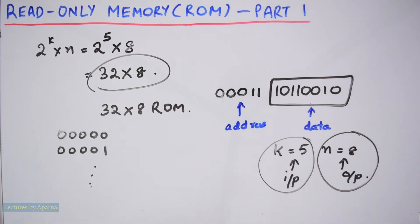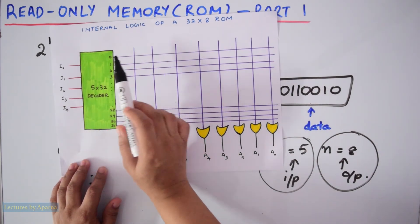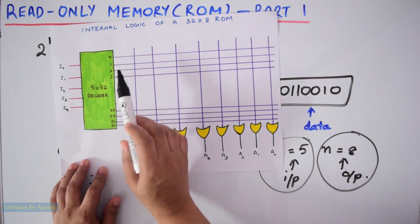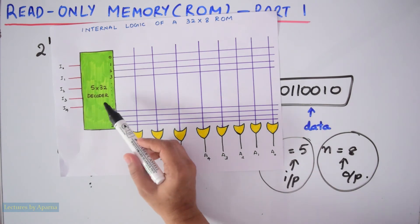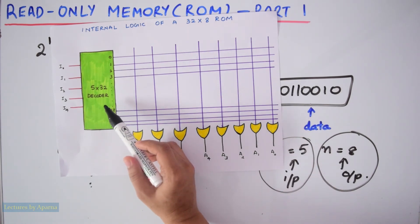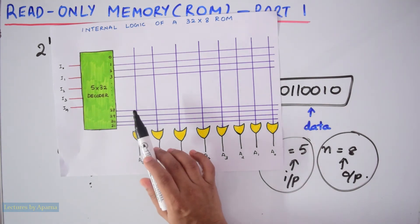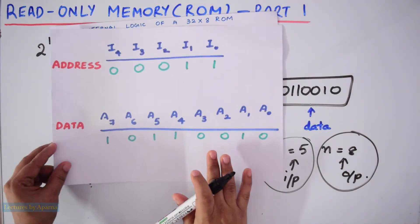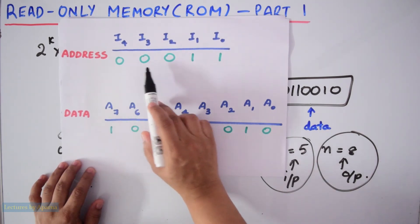So in total there will be 32 distinct outputs from the decoder. The decoder is a 5-to-32 decoder because it has 5 inputs and 32 outputs. Each output from the decoder represents a memory address — for example, 00011 is a memory address, which is decimal 3.